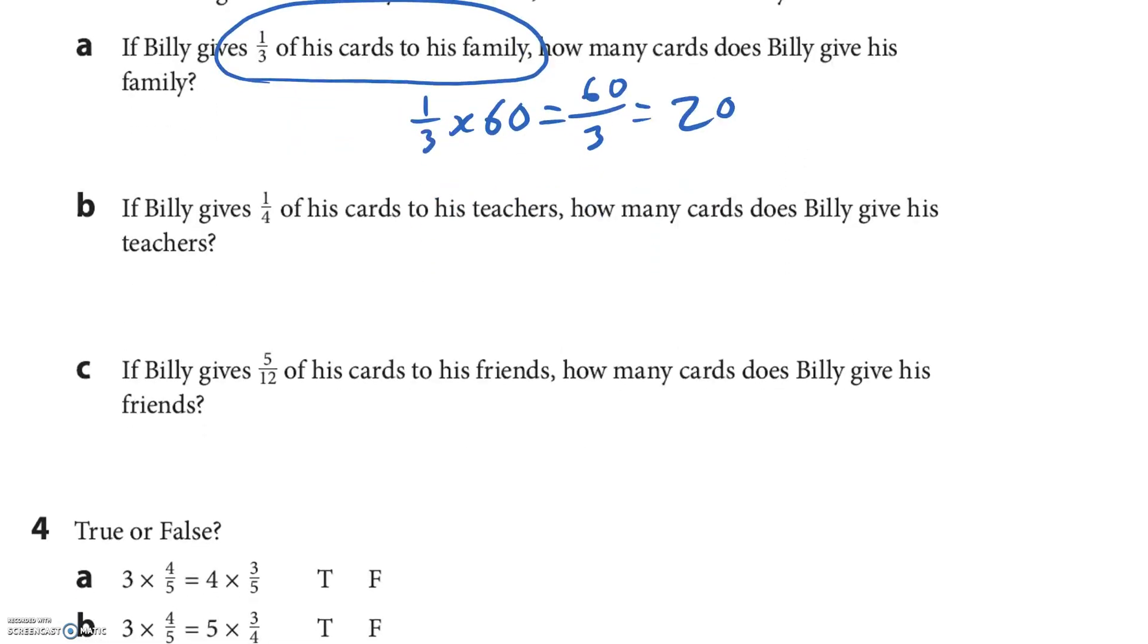All right, let's do the next one. One-fourth. So I'm going to take my sixty and I'm going to divide it up in half. So the whole thing is sixty. That's thirty, but one-fourth, I want half of that. So I'm going to draw my fourths. So half of thirty is fifteen. So it's fifteen cards to his teacher.